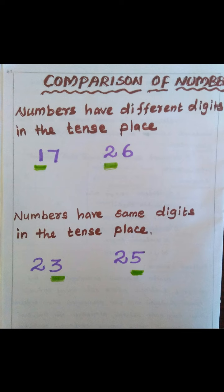First, when numbers have different digits in the tens place, how do we find out the biggest number and the smallest number?